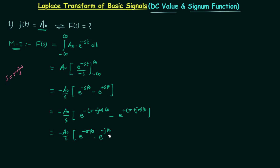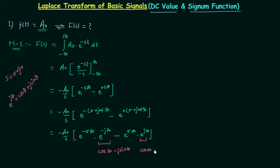Similarly we break the second exponential as e^(σ·∞) multiplied by e^(j·∞). Using Euler's formula, e^(jθ) = cos θ + j·sin θ, we get cos(∞) − j·sin(∞) from the first term, and cos(∞) + j·sin(∞) from the second. Sine and cosine have values between −1 and +1, but at infinity the angle is undefined — so the value is finite but indeterminate.